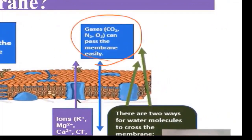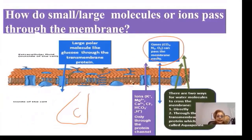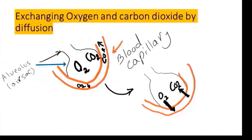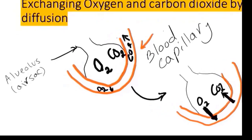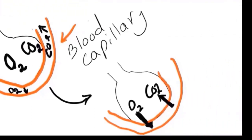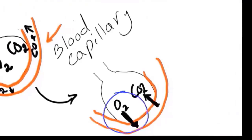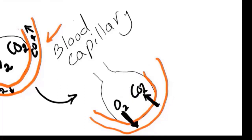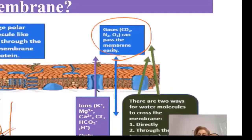Gases like carbon dioxide and oxygen molecules can go directly through the membrane. For example, in the lung you have air sacs where inhaled oxygen accumulates. Because you have more oxygen there, it diffuses into the blood vessels, and accumulated carbon dioxide diffuses into the air sac. These molecules are non-polar, so they can pass easily through the membrane.